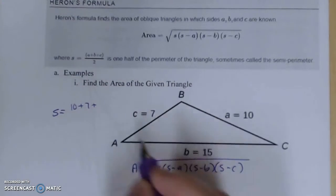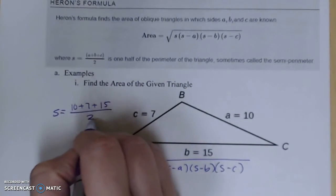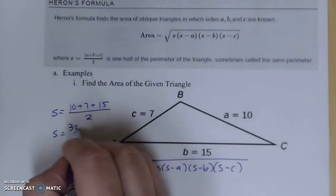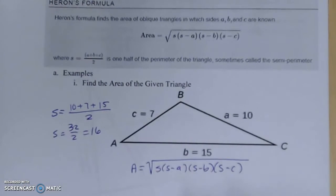So 10 plus 7 plus 15 all over 2. Adding those up, we get 32 in our numerator over 2, which gives us 16.